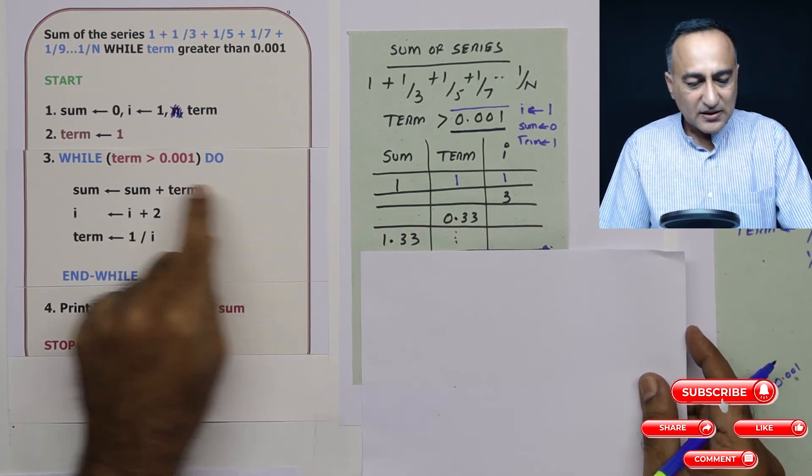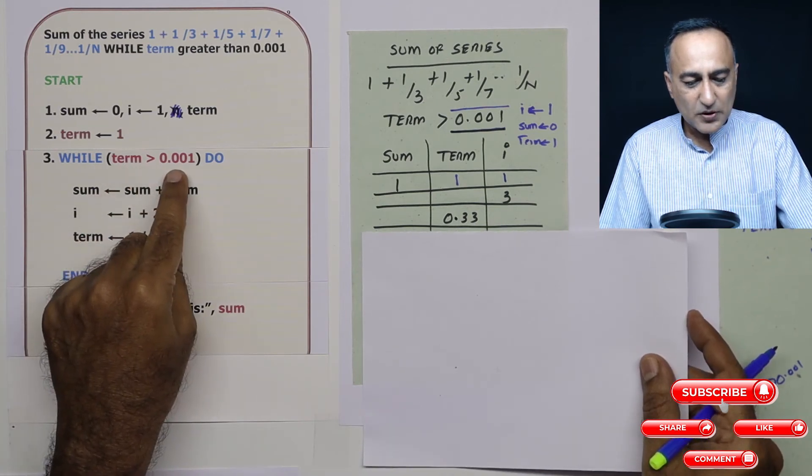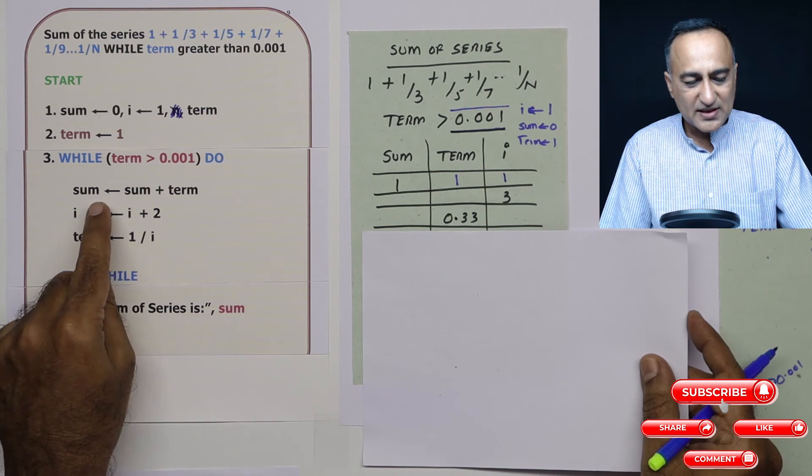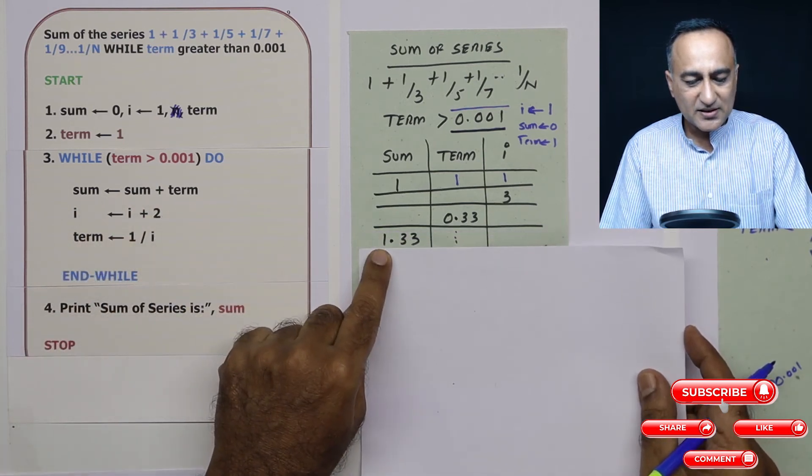Then in the next step 0.33 is still greater than 0.001. So I say sum is 1 plus 0.33, so it becomes 1.33.